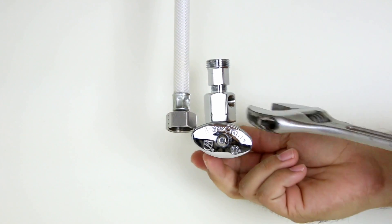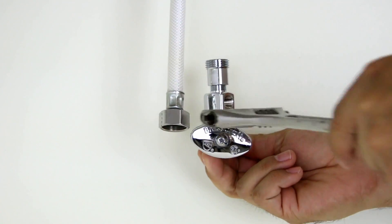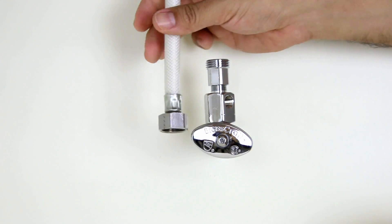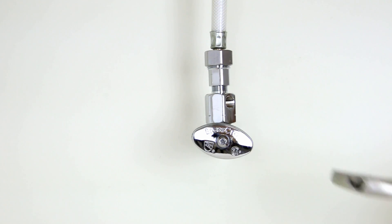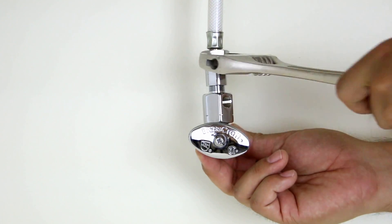Use an adjustable wrench to secure the connection. Now connect the riser tube and tighten. Use an adjustable wrench to secure the connection.